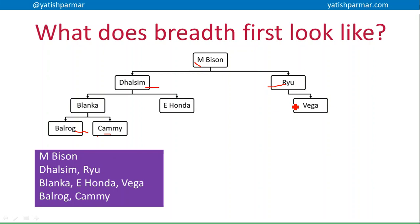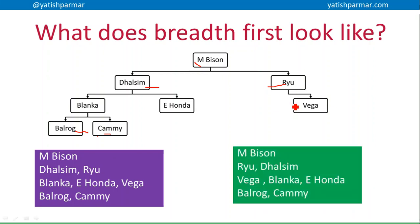There are multiple possible outputs for a breadth-first traversal. An alternative might be something like M-Bison, Ryu, Dalsim, Vega, Blanca, E-Honda, Balrog — because Ryu was enqueued before Dalsim in the second version. Therefore, we visit Ryu's children before we go to Dalsim's children.